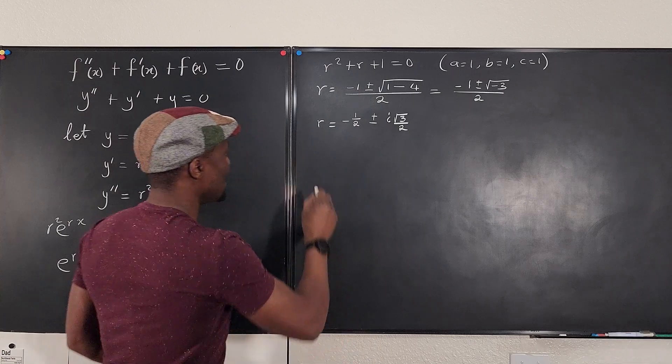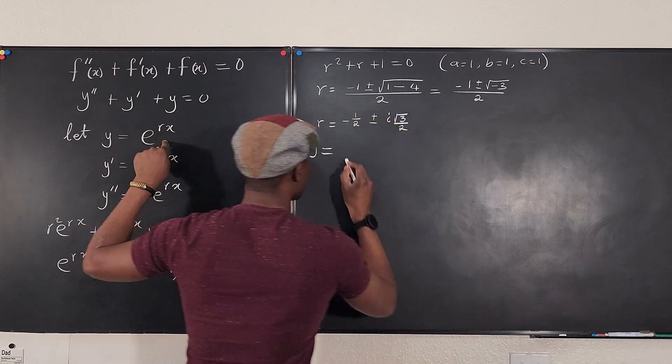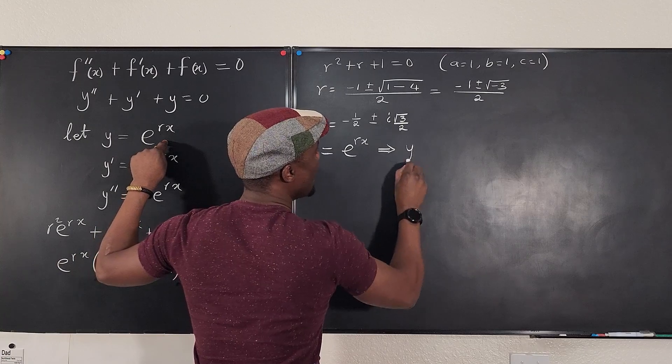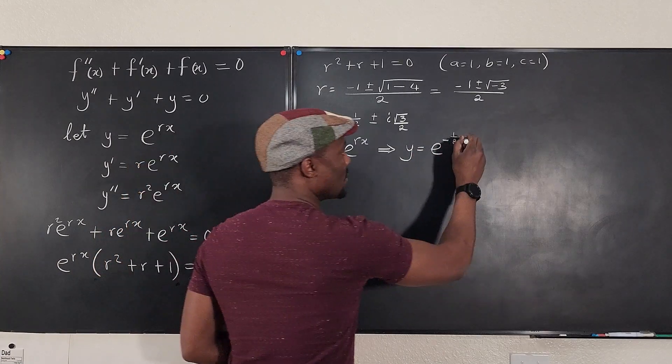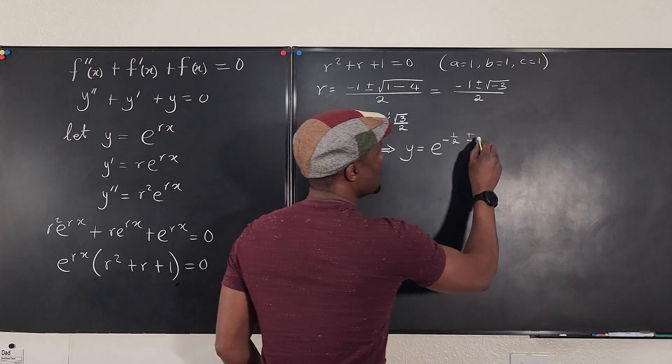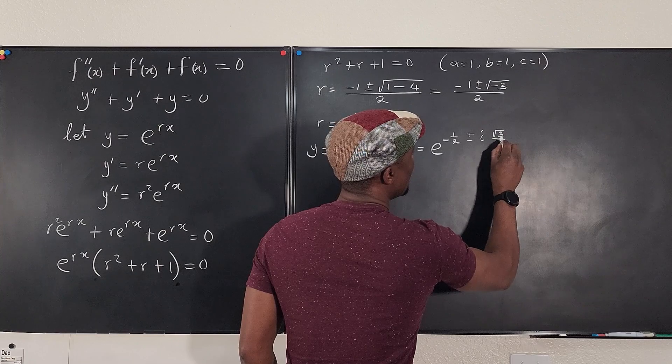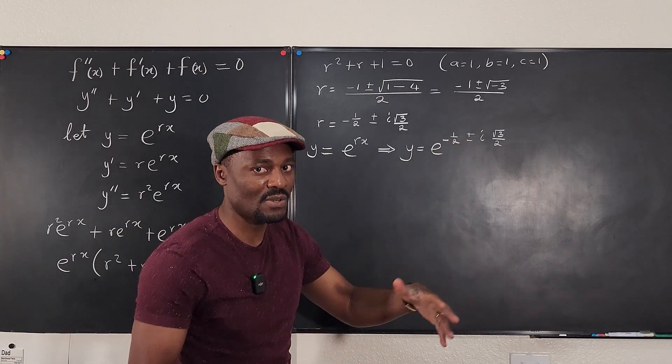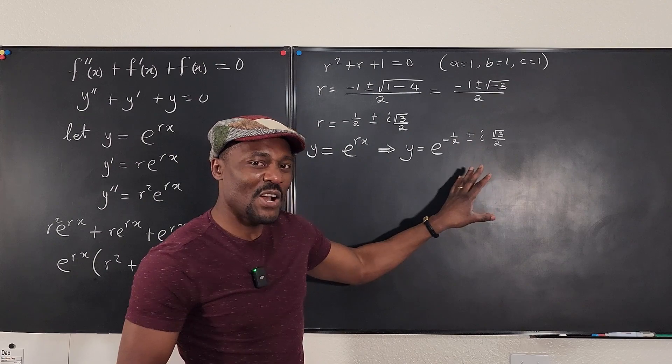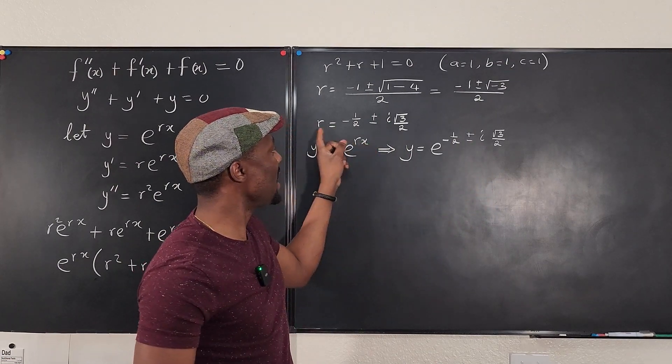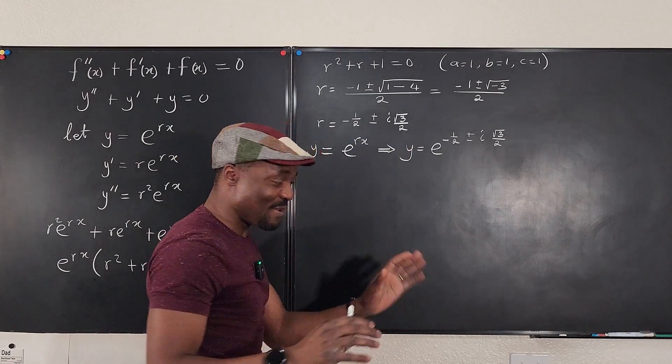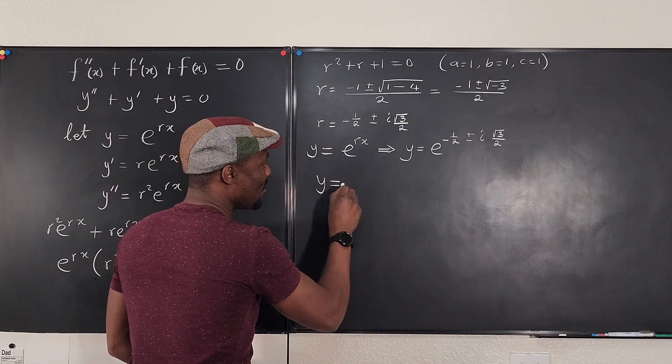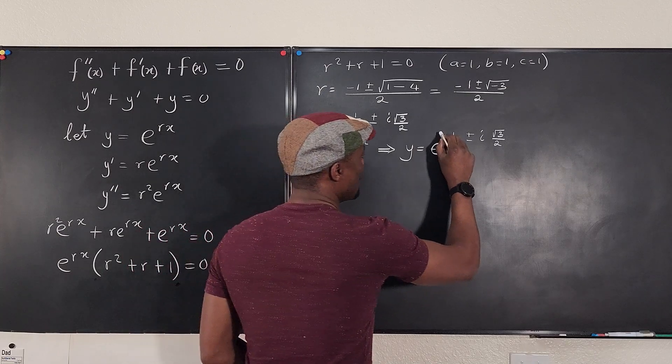So just imagine that since y, as we claimed from the beginning, is e to the rx, this implies that y equals e to the negative one half plus or minus i square root of three over two, multiplied by x. We can say that y is equal to, oh sorry, multiplied by x. There's an x here.